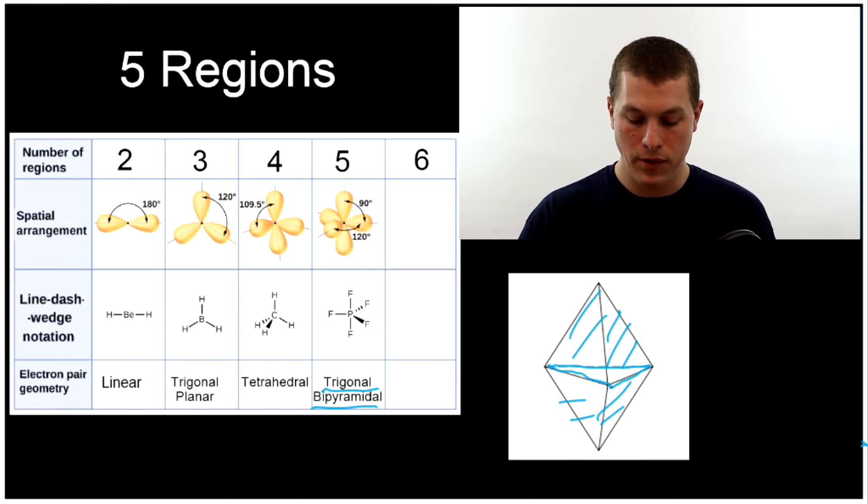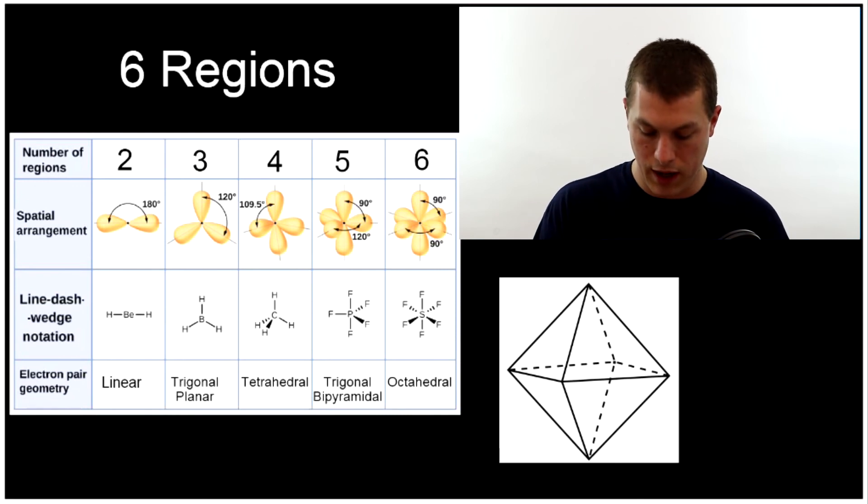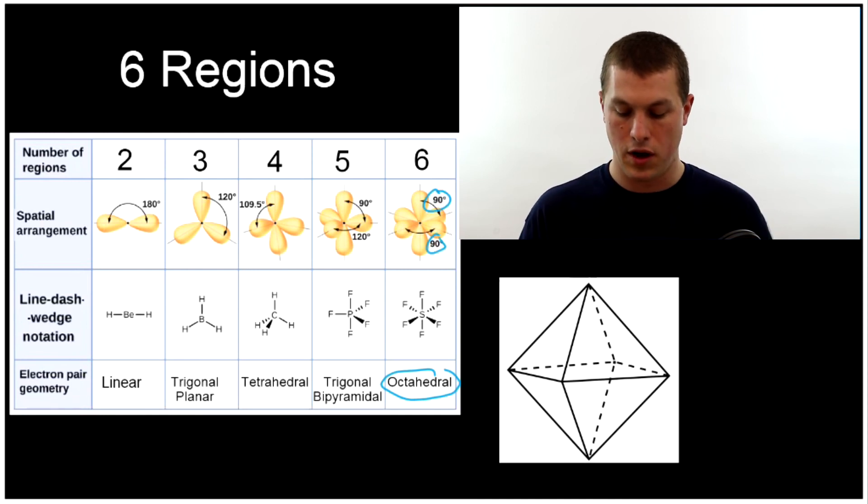Last example is when we have six regions of electron density. Here it's like a diamond basically, with my central atom right here and then one at each vertex. We can think about the fact that this surface has eight sides. The top half has four sides because it's like a four-sided pyramid, and the bottom half has four sides, also like a four-sided pyramid. That gives us a total of eight sides, so we call it an octahedral. All the bond angles here are 90 degrees, whether you're going up, down, or left, right, because it's all around basically this square shape in the center.